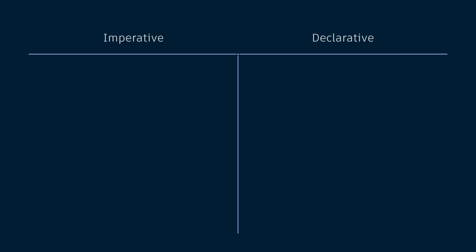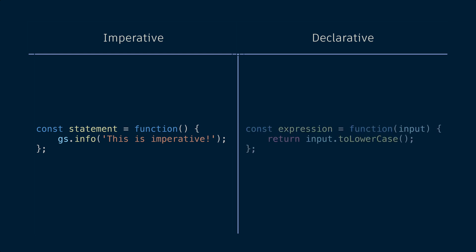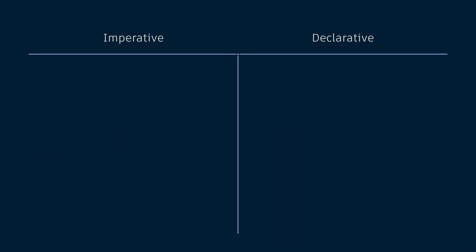Let's take a look at a simple example in JavaScript. On the left-hand side, we have an example of an imperative statement — a simple function doing nothing more than printing a string to the log. On the right-hand side, we have another simple function, but this time it's taking input, doing something with that input — in this case converting it to lowercase — and then returning that output. This is what a declarative function does: it takes something in and spits something back out.